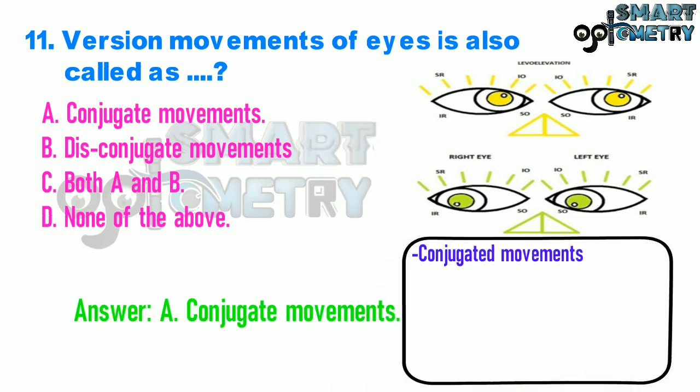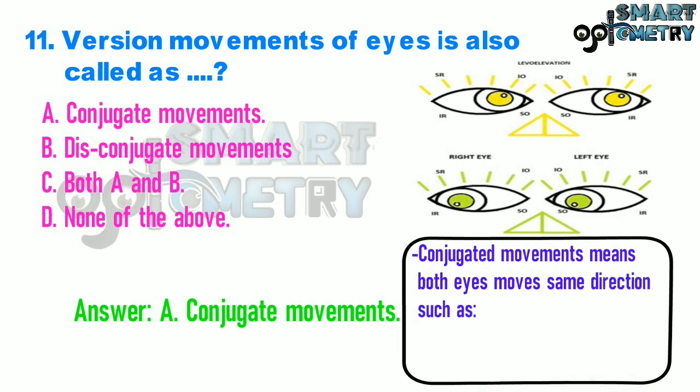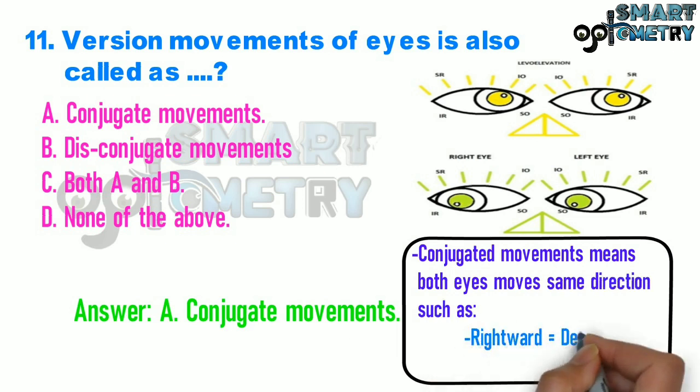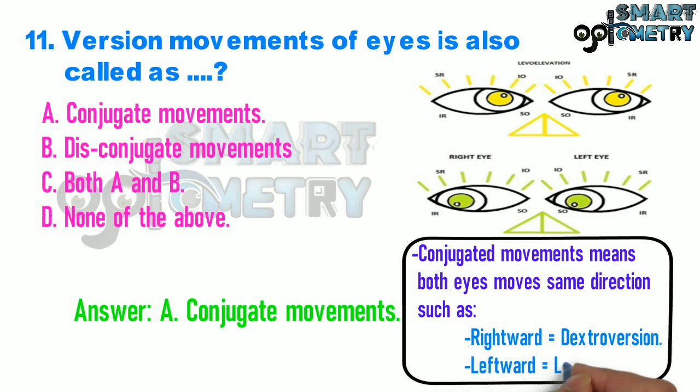Conjugate movements means both eyes move in the same direction, such as rightward, which is dextroversion, and leftward, which is levoversion.